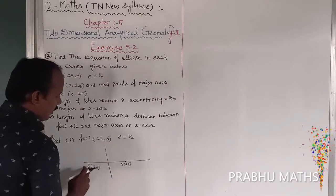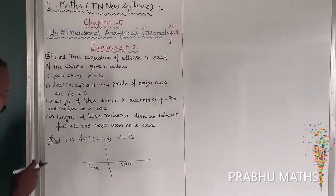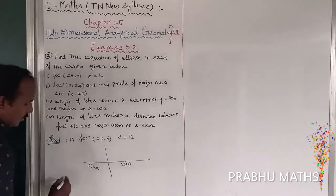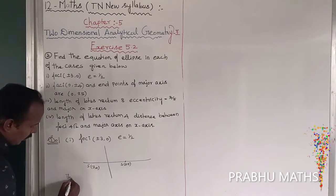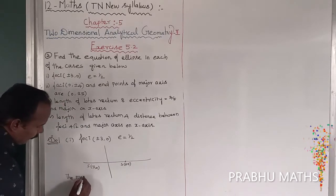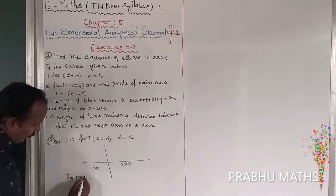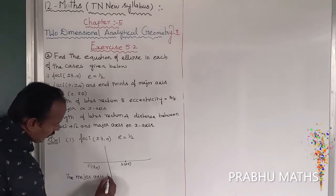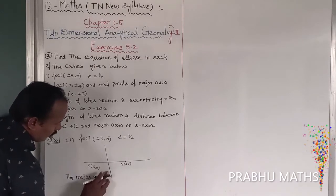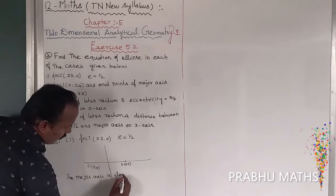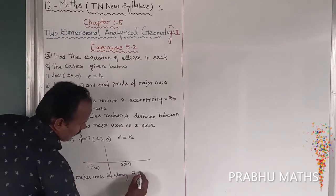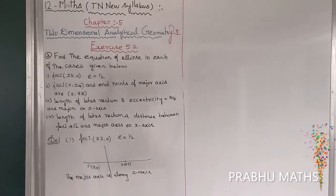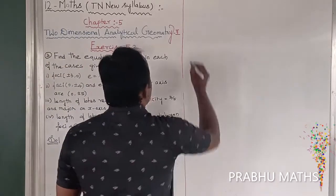Next, eccentricity. The major axis is along the x-axis. The major axis is along the x-axis, and then vertices and center.